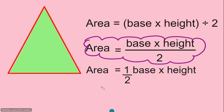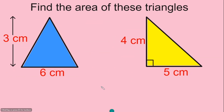Let's get into the first question. Here we have the first triangle — the base is 6 centimeters and the height is 3 centimeters — and we need to find the area. To find the area, you begin by writing out the formula: the area of a triangle is the base times the height divided by 2.